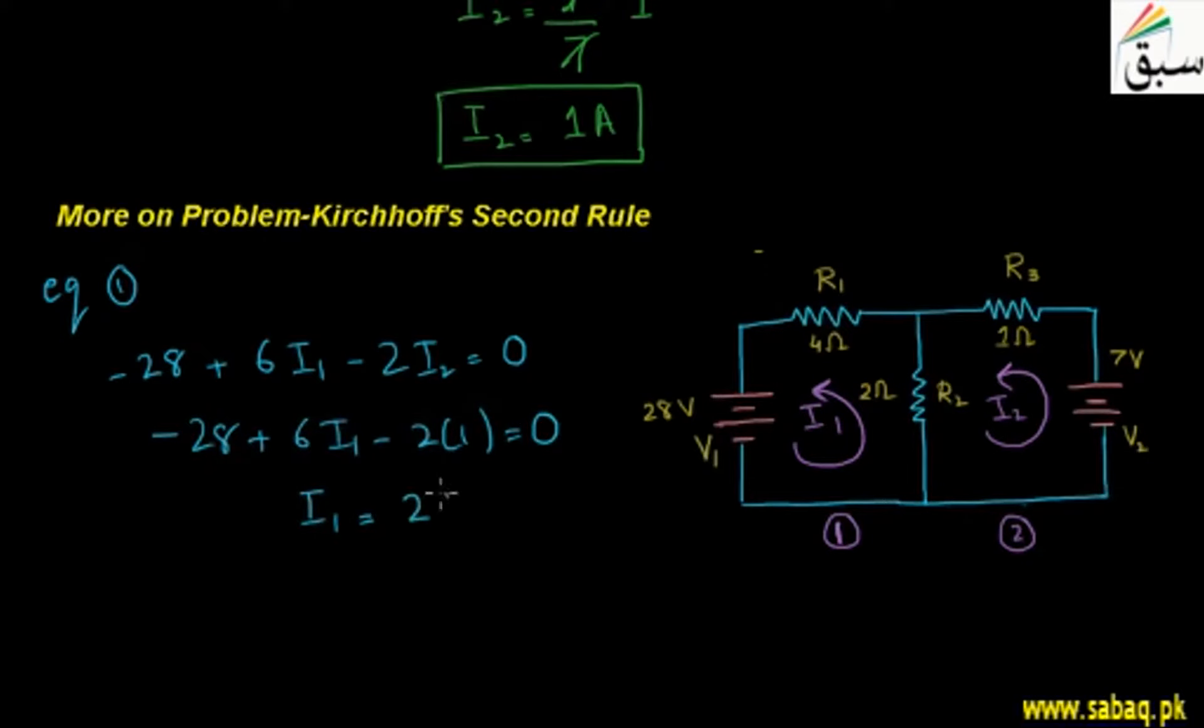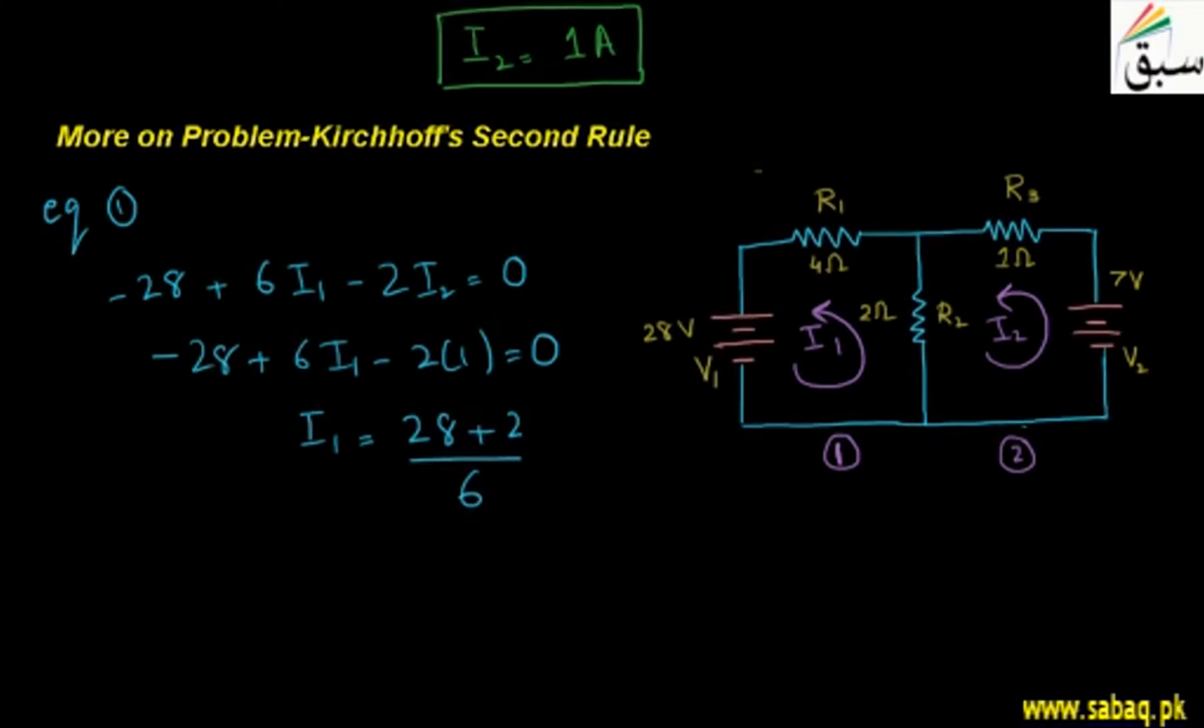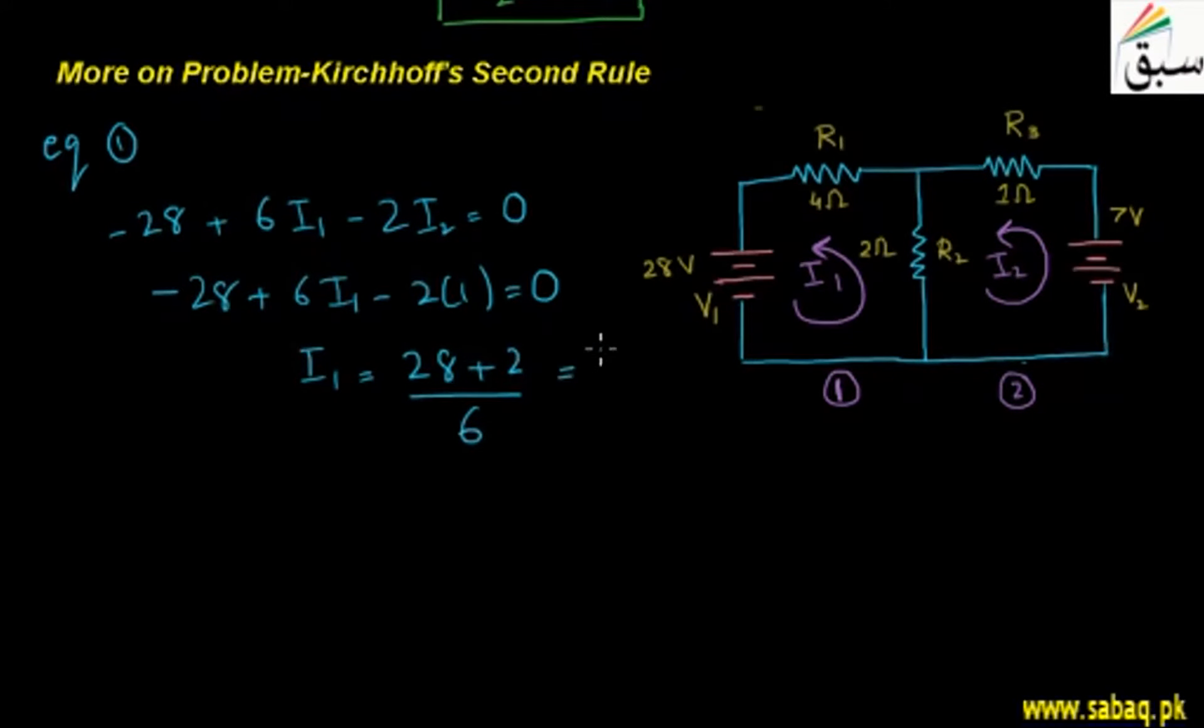Here the value of I1 will be 28 plus 2. Now, 2 plus 28 is 30, and we will divide by 6. If I solve from the other side, then we get 30 divided by 6. So I1 will be 5A.